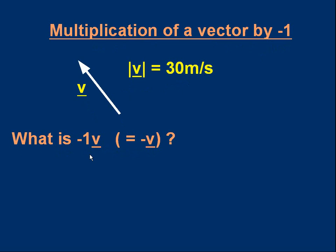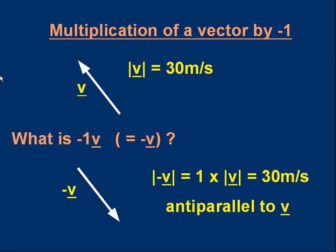The new vector is in the opposite direction because of the minus sign, and the magnitude hasn't changed because the size of the scalar was 1. So the minus sign reverses the direction. The magnitude of minus v is 1 times 30 meters per second, so the magnitude is still 30 meters per second. The direction is anti-parallel to v. If we negate a vector — that is, multiply it by minus 1 — we reverse the direction without changing the magnitude.